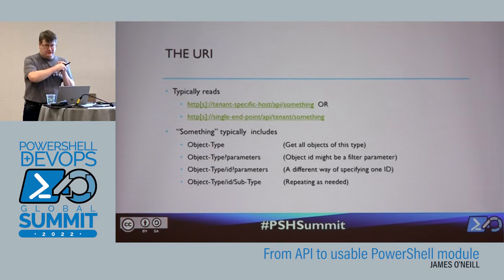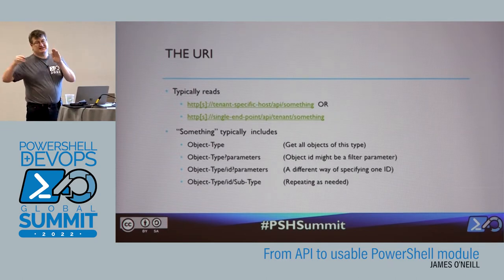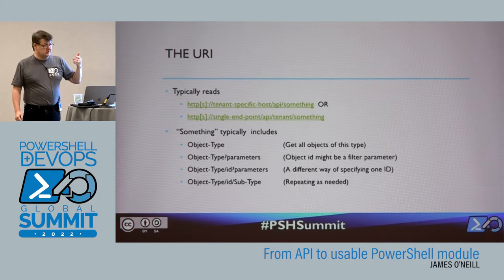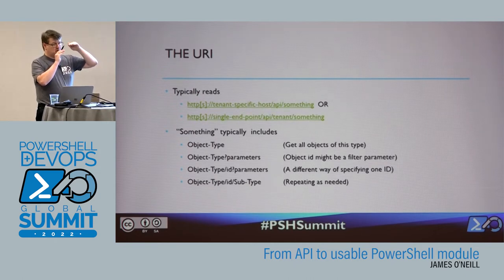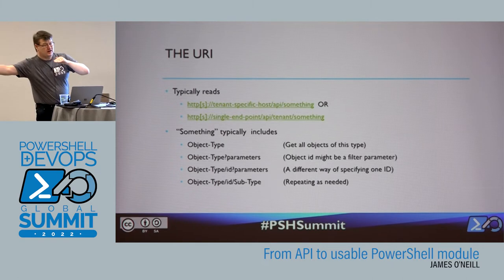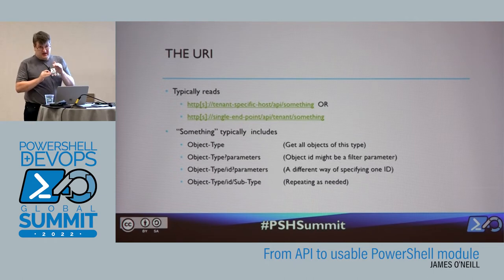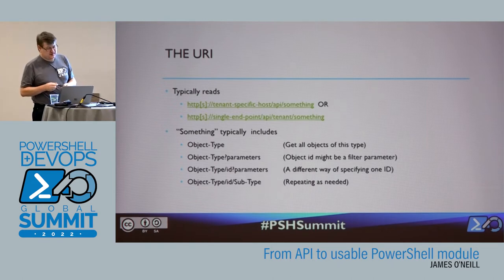In some cases you find that you request an object by ID and that object has descendants — so you might say get me this Octopus project, then get me the steps in the project and the actions in those steps, and you build up a hierarchy in the URI. One of the APIs I worked with prior to this was the one for Azure DevOps, and DevOps does this to an enormous degree. If you want to change the form for a particular kind of work item, you can be about seven or eight layers deep in that URI chain.